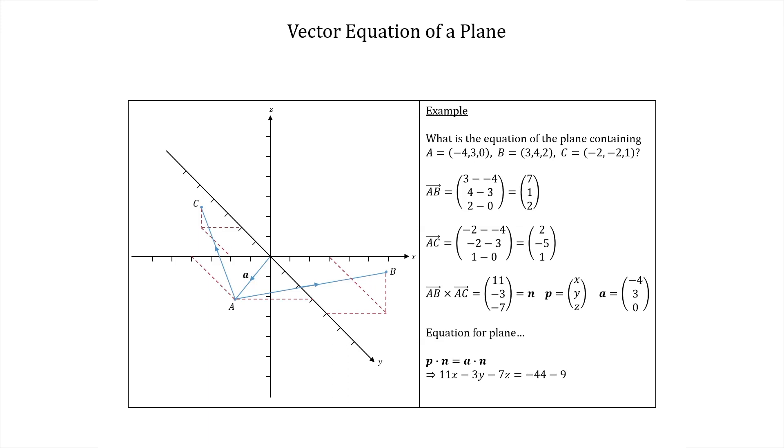Finally this gives us the equation 11x - 3y - 7z = -53.